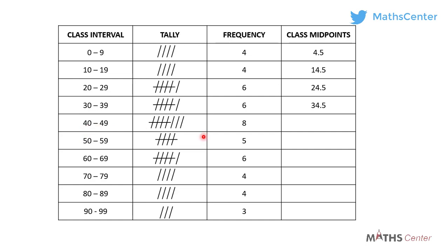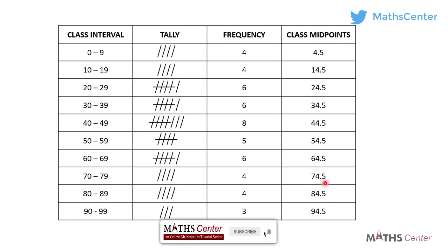40 plus 49 divided by 2 gives us 44.5. 50 plus 59 divided by 2 gives us 54.5. 60 plus 69 divided by 2 gives us 64.5. 70 plus 79 divided by 2 gives us 74.5. 80 plus 89 divided by 2 gives us 84.5, and finally 90 plus 99 divided by 2 gives us 94.5. So we have the class midpoints for all the classes.